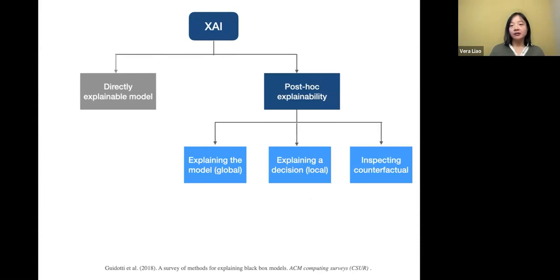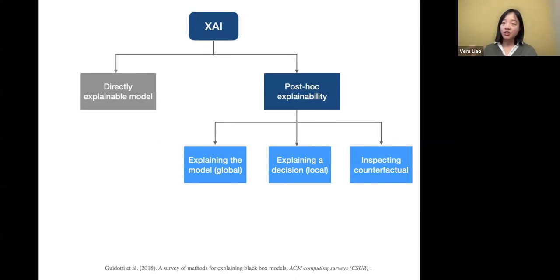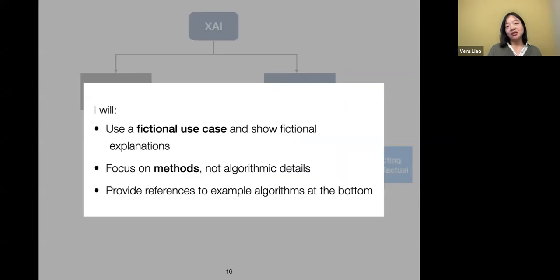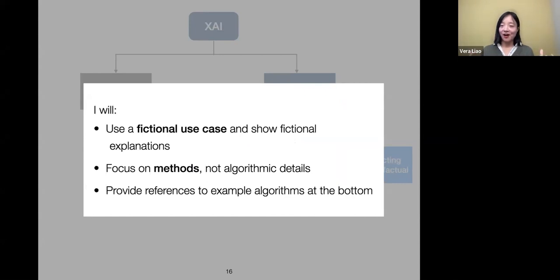A lot of algorithms fall into post-hoc explainability — you start with a deep neural network or ensemble tree, then use another set of techniques to generate explanations. I want to give you an overview of how these different algorithms' outputs look. I'll use a fictional use case and show fictional explanations — basically how the output of those algorithms looks. I will focus on the methods, not the algorithmic details. References are at the bottom of my slides.